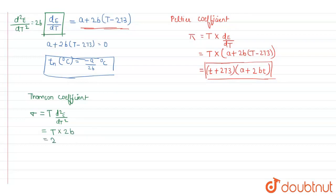So that will be 2 times t plus 273 times b. So this is our Thomson coefficient.